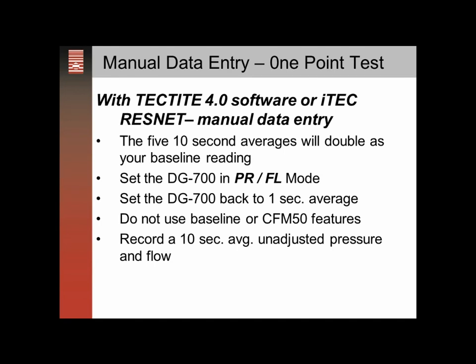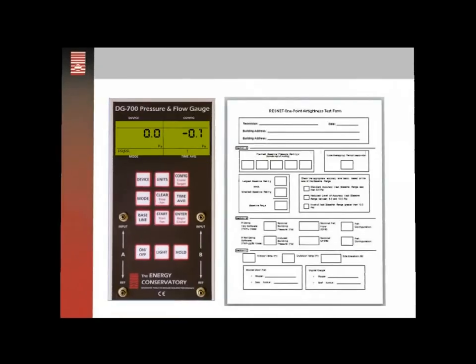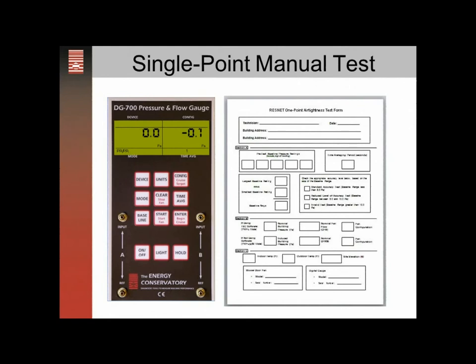After getting the house up to 50, we'll record a 10-second unadjusted pressure and flow reading. Set the gauge back to 10-second averages, bring the house up to 50, and record that unadjusted pressure and flow reading. Then we can use the software to generate a report.